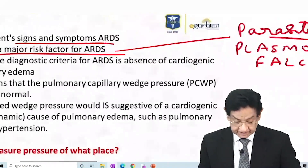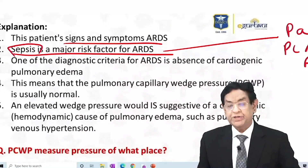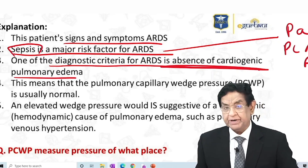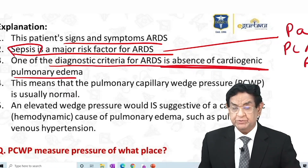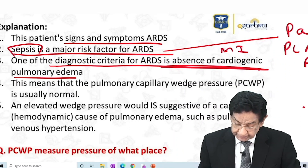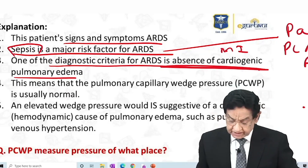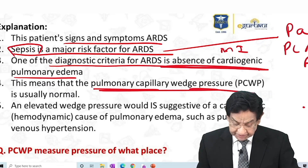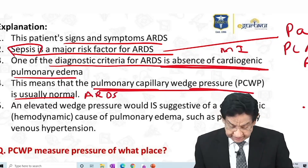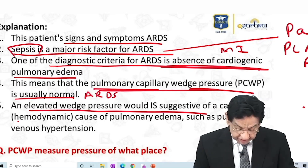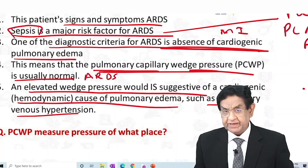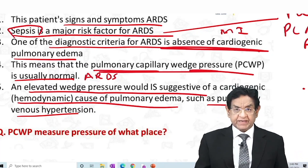So the answer is Plasmodium falciparum. One of the diagnostic criteria of ARDS is the absence of cardiogenic pulmonary edema. Cardiogenic pulmonary edema is usually due to some cardiac condition like acute myocardial infarction. In cardiac pulmonary edema, pulmonary capillary wedge pressure is increased. In pulmonary venous hypertension we may get cardiac edema, which we also get in acute MI.